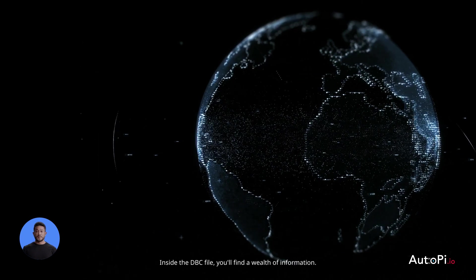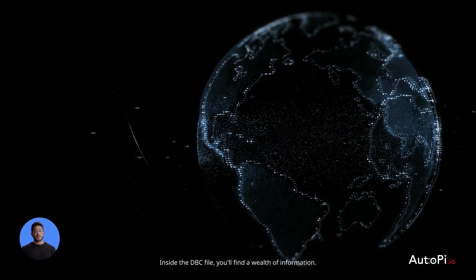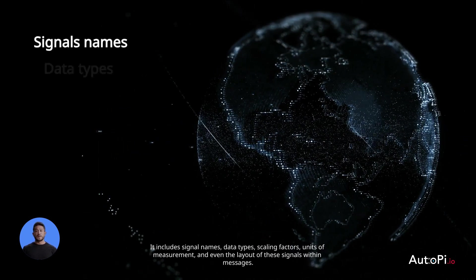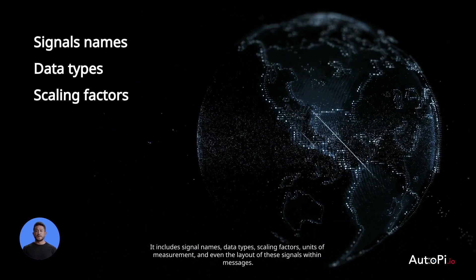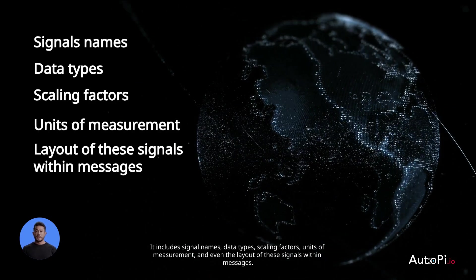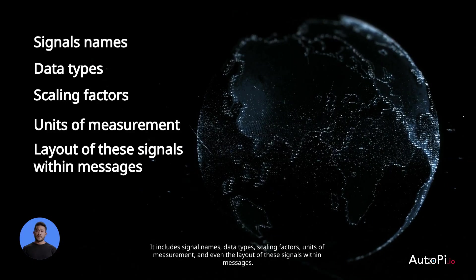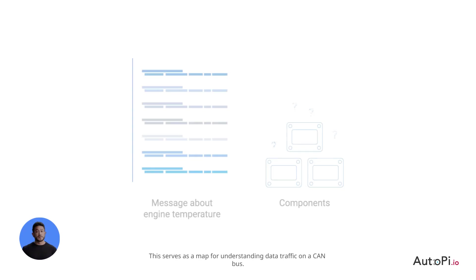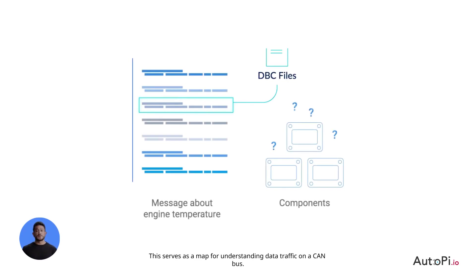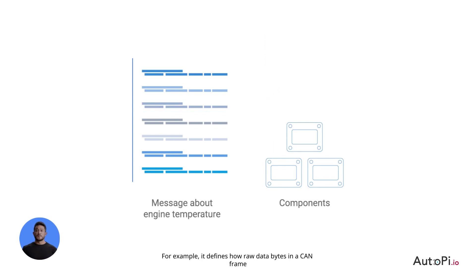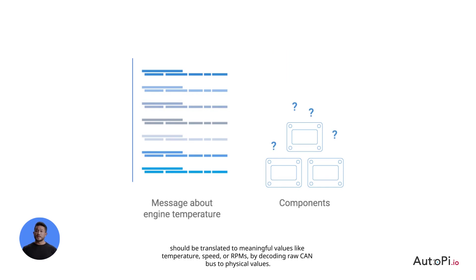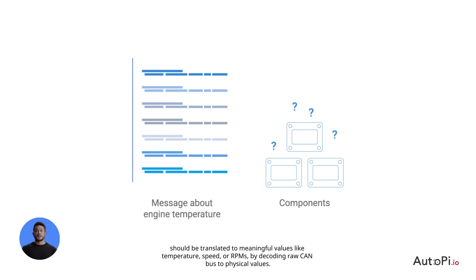Inside the DBC file, you'll find a wealth of information. It includes signal names, data types, scaling factors, units of measurement, and even the layout of these signals within messages. This serves as a map for understanding data traffic on a CAN bus. For example, it defines how raw data bytes in a CAN frame should be translated to meaningful values like temperature, speed, or RPMs, by decoding raw CAN bus to physical values.